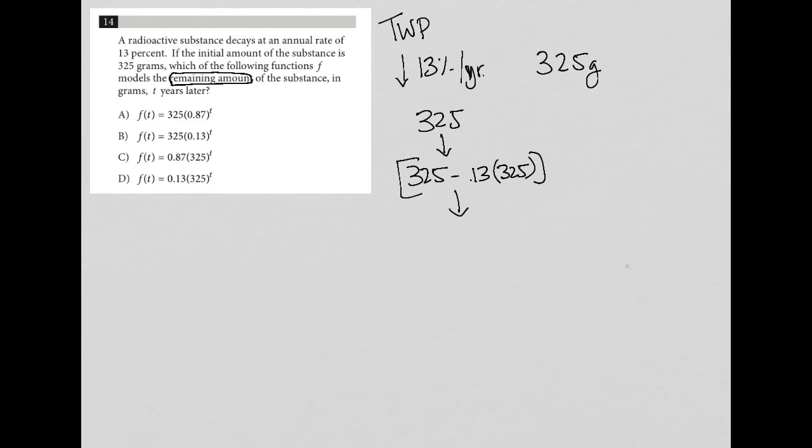if I'm starting off with 100% of a substance, and then I'm decreasing it by 13% of a substance, then what I'm left with is 87%. Because I'm just subtracting 100 minus 13 is equal to 87%. On this test,